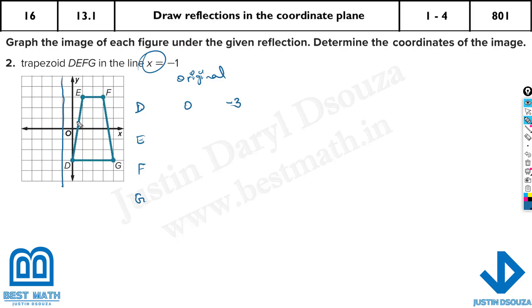E is (1, positive 3). F is at x equal to 3 and y equal to positive 3. And lastly G is at x equal to 4 and y equal to negative 3.